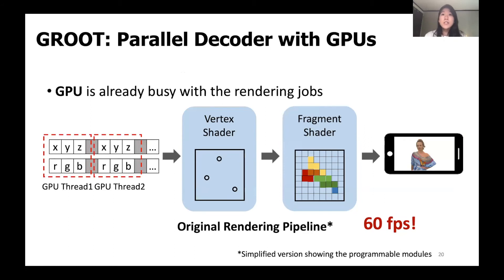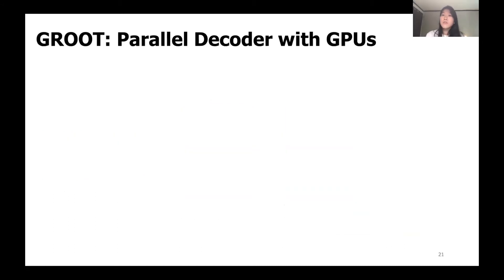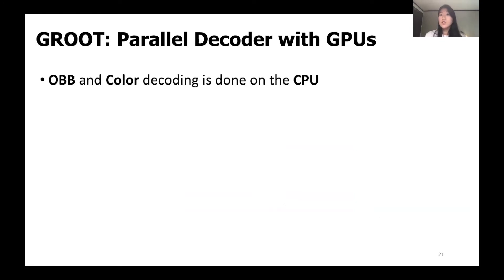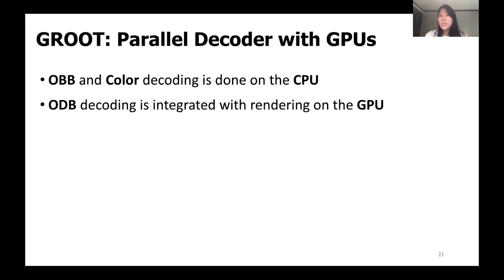Now that there is no dependency between compressed points, we can enable fast parallel decoding leveraging mobile GPUs. The challenge is that the GPU is already extensively used for rendering, which runs periodically at 60 FPS to meet the motion to photon latency. To render point clouds, the GPU handles each point in parallel using the vertex shader to project points onto the screen and the fragment shader to color them. To leverage the GPU for decoding without disrupting rendering, we divide the task between CPU and GPU. We decode the OctTree breadth bytes and color bytes on the CPU, and the remaining decoding job for the OctTree depth bytes is integrated into the same GPU kernel function for rendering.